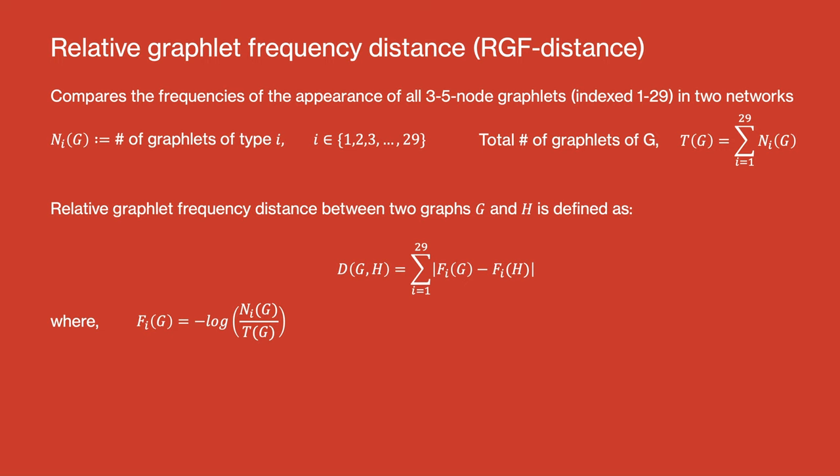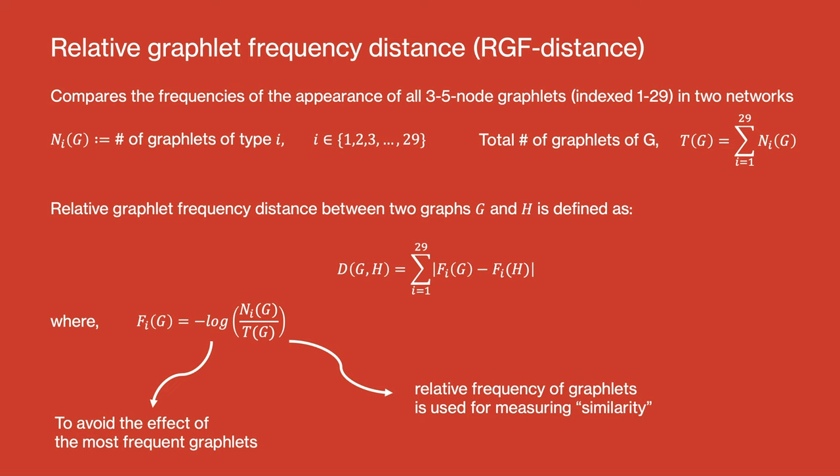The division by T is important because similarity between two graphs should be independent of total number of nodes or edges and should only depend on differences between relative frequencies. Also, the logarithm is used because frequencies of different graphlets can differ by several orders of magnitude and the distance measure should not be entirely dominated by the most frequent graphlets.